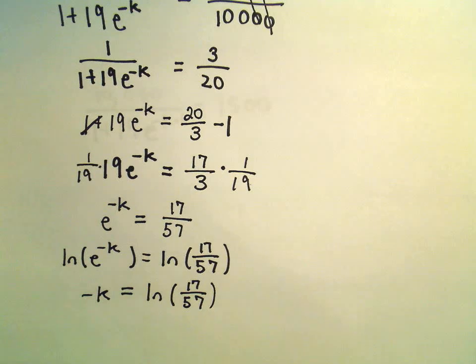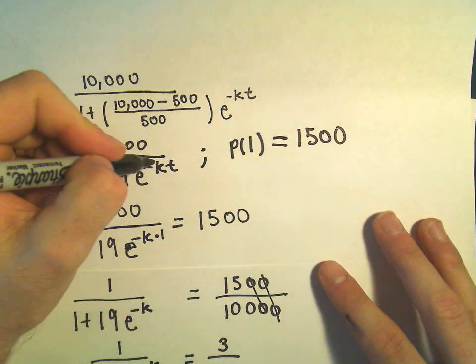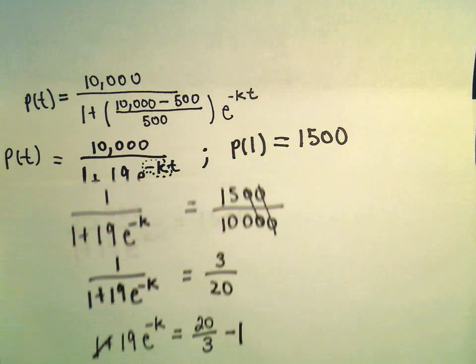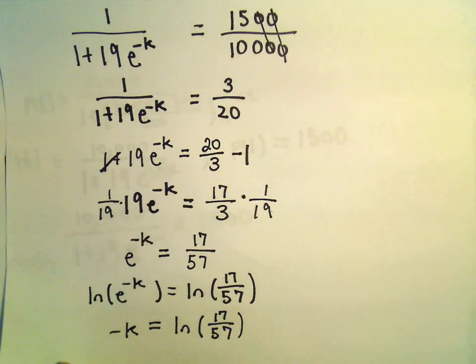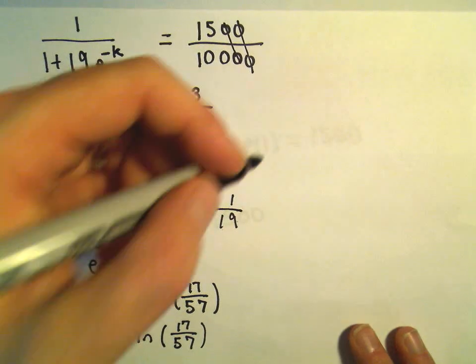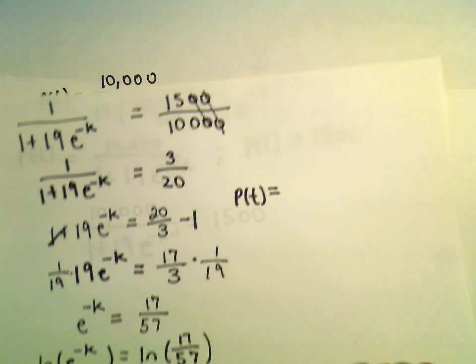And I think I'm actually going to stop at this point because, again, our formula for our population model, right? There was a negative k in there. So now I can simply replace the negative k with the natural logarithm of 17 over 57. So let's see if we can't squeeze it all in here. So the population at some time t.